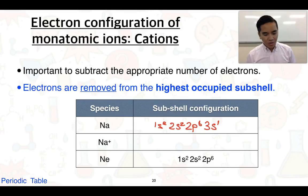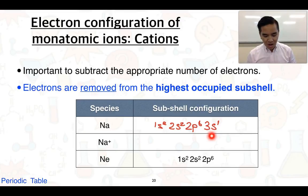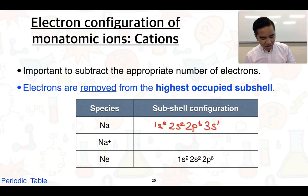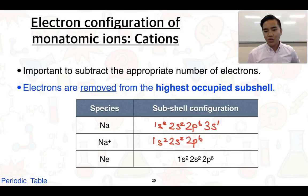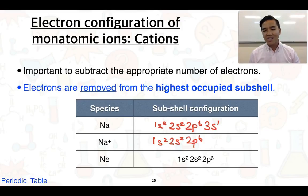If we are going to form a sodium ion — Na⁺ has a positive charge so it's lost one electron — we lose that one electron from the highest occupied subshell, which is 3s. When we write the electron configuration we are left with 1s² 2s² 2p⁶, which is exactly the same electron configuration as neon. So sodium ions adopt the same electron configuration as neon atoms because neon has a stable valence shell configuration.